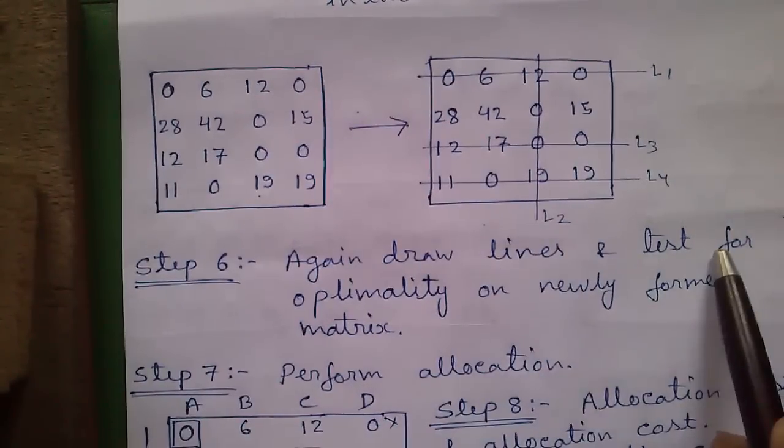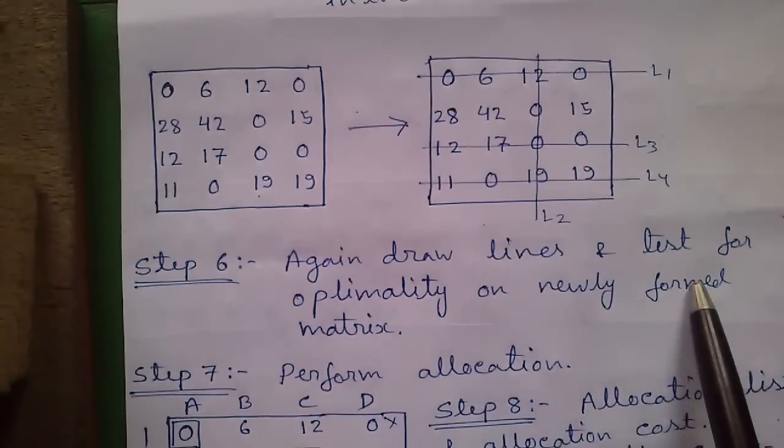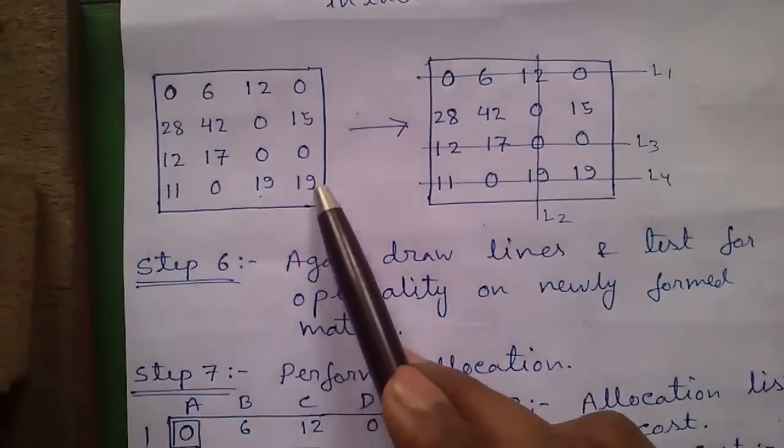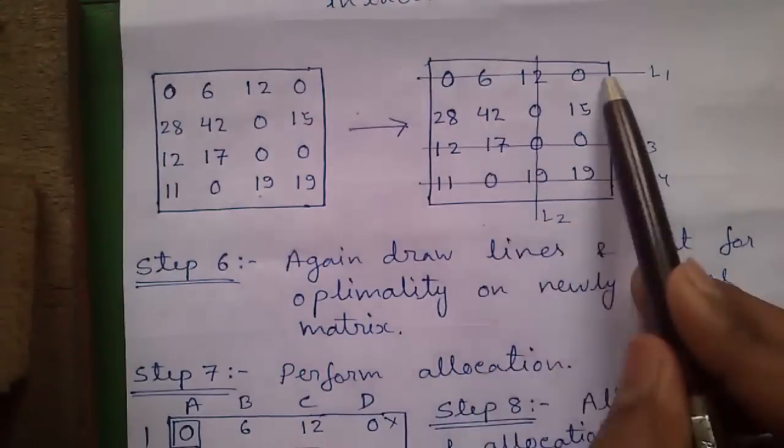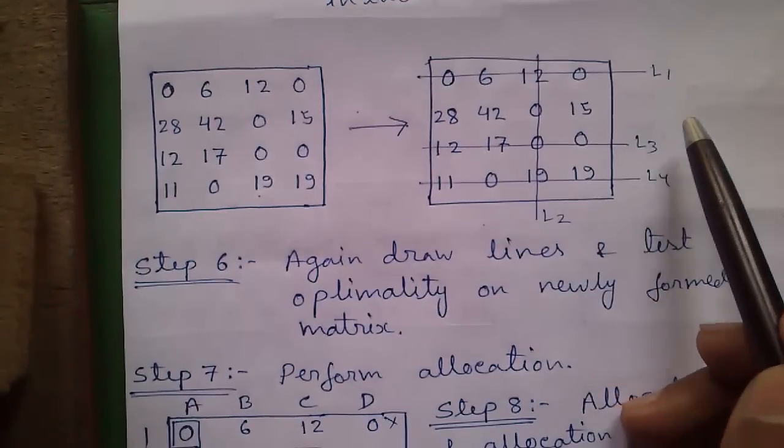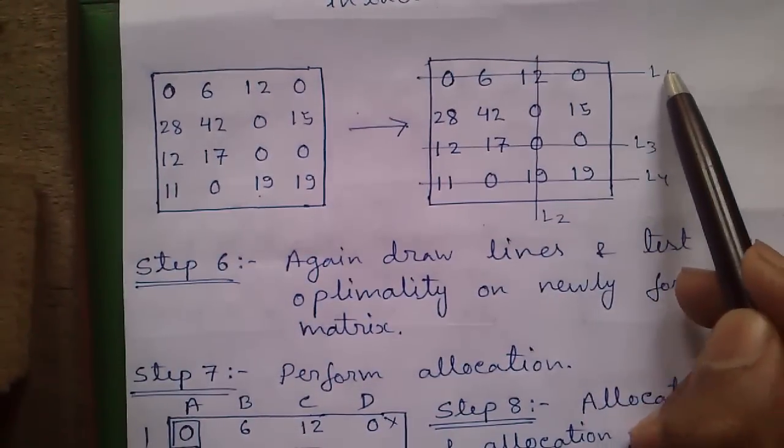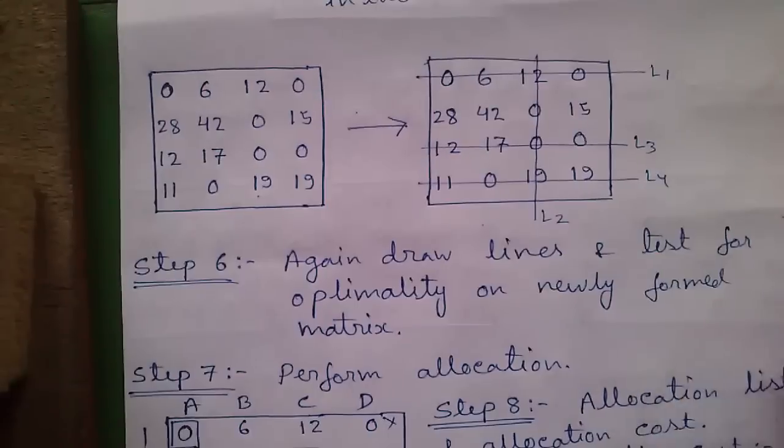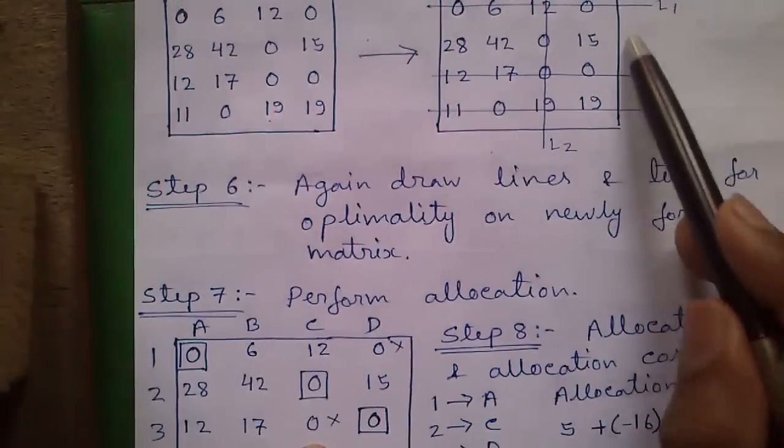Step 6: Again draw lines and test for optimality on newly formed matrix. Again we will draw lines by the same process and test for optimality. This time our lines are L1, L2, L3, and L4. So it's an optimal allocation.